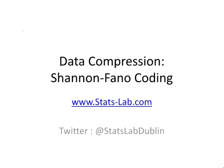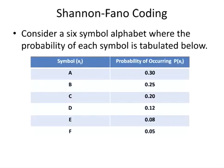In this presentation, we are going to look at Shannon-Fano coding. Let's look at an example. Suppose we have a six-symbol alphabet where the probability of each symbol is tabulated. The probability of symbol A is 0.30, symbol B is 0.25, and so on.